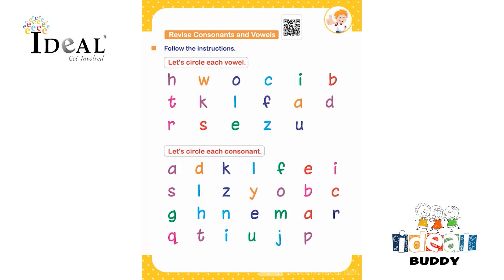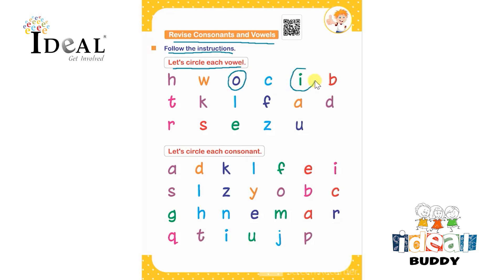Hello everyone. Here the topic is revising consonants and vowels. First, the child has to follow the instructions given. In the first activity, the child has to circle the vowel as shown. Let's circle each vowel — the child has to identify the vowel from the given letters and circle it. O, I, A, E, and U are the vowels.